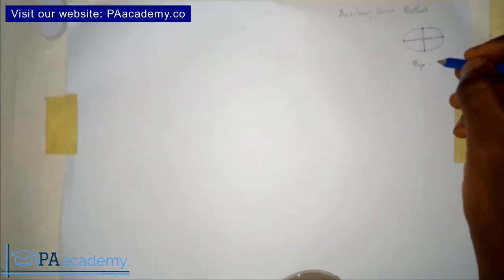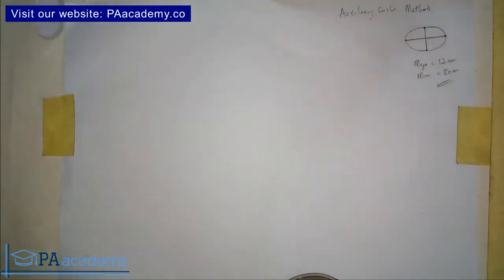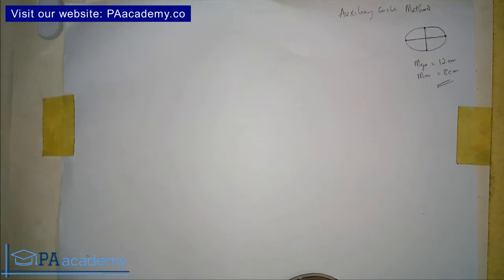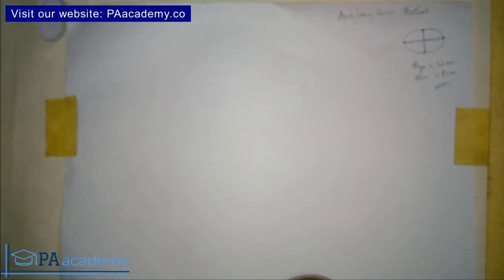For our major axis we are going to use 12 centimeters, and for our minor axis we are going to use 8 centimeters — the same units used in the rectangular method. Whichever method you decide to use, you are still going to get the same results. At the end of this video you'll be able to draw an ellipse using the auxiliary circle method.